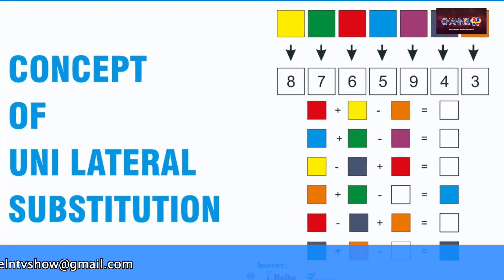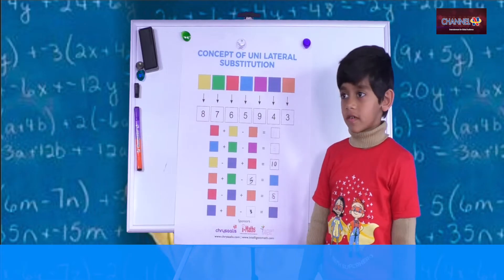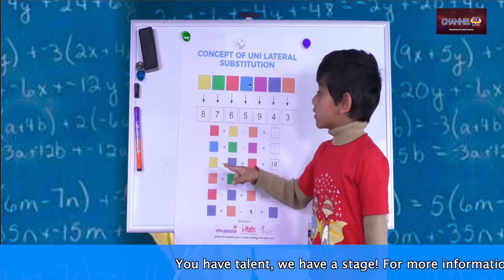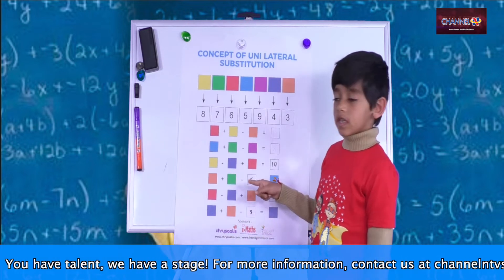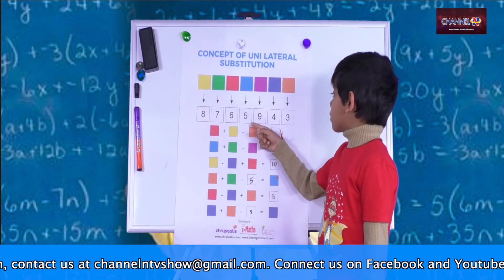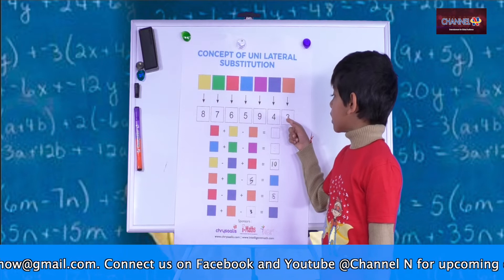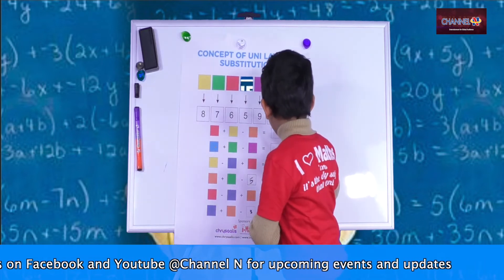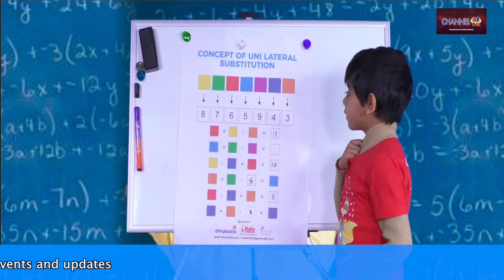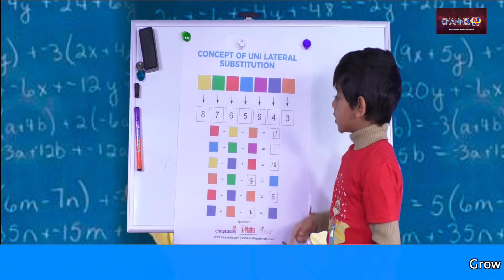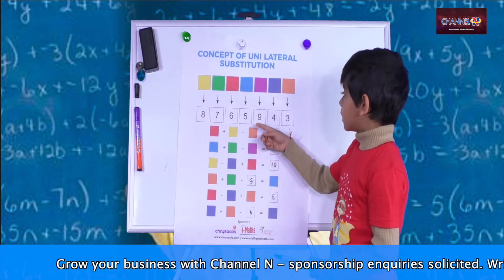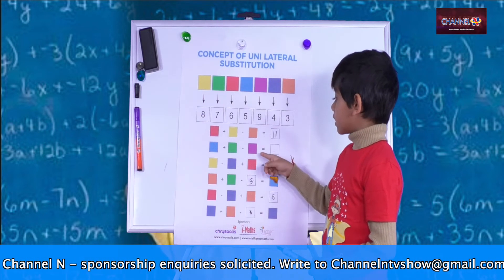Concept of unilateral substitution. Red is 6 and yellow is 8, so 6 plus 8 equals 14. 14 minus orange — which means orange is 3 — equals 11. Light blue is 5 and green is 7, so 5 plus 7 is 12. Minus purple, which is 9, equals 3.